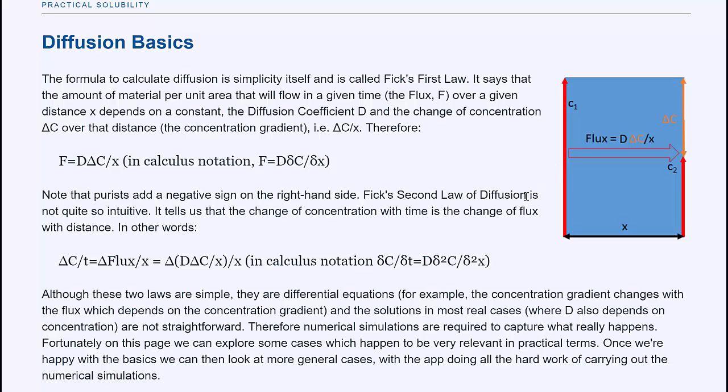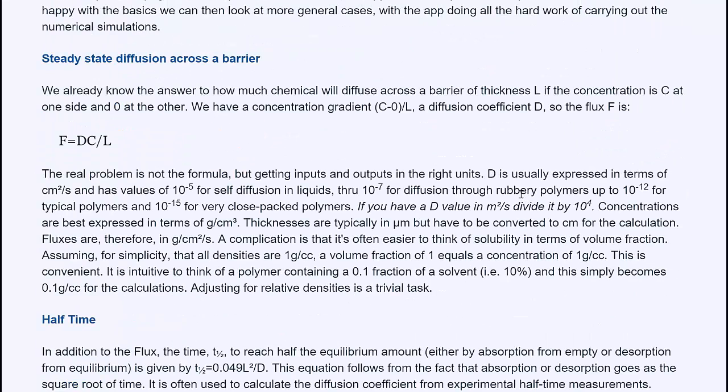But staying with just the simple stuff, we know that if we have a concentration c on one side and a concentration zero at the other, and if the barrier has a thickness l, and if the diffusion coefficient d is known, then the amount of stuff coming through per time per unit area is dc over l.